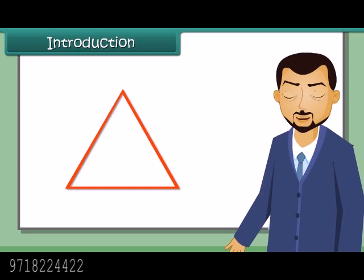Now a question arises whether four measurements would be sufficient to draw a unique four-sided closed figure, namely a quadrilateral. As a quadrilateral has eight parts, we need to know at least five parts to draw a quadrilateral.